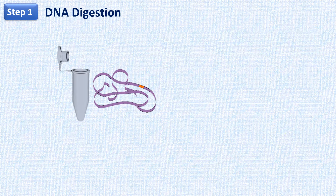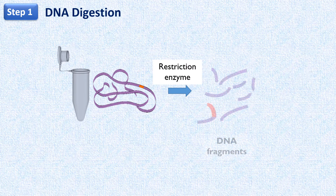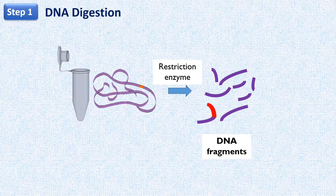In the first step, the bacterial DNA is digested with a restriction enzyme. This step results in thousands of DNA fragments of various sizes, because the restriction enzyme cuts the chromosomal DNA at many different sites within the chromosome.